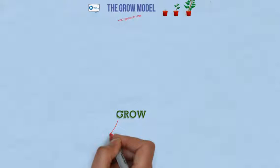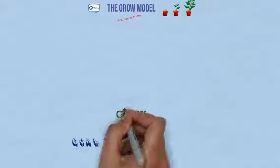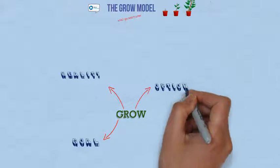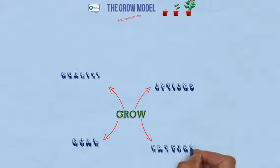GROW is a coaching model that uses a simple acronym relating to goal, reality, options, and either way forward or will. Let's look at these in turn.